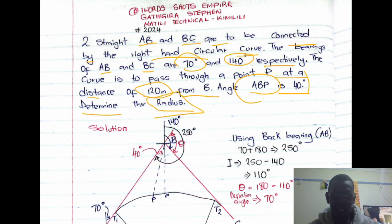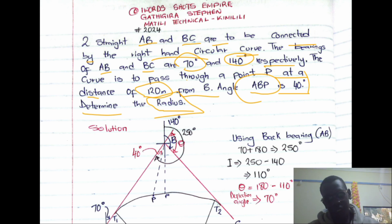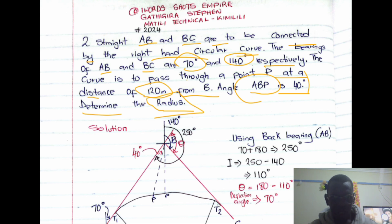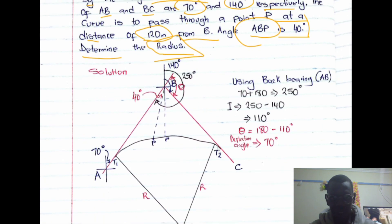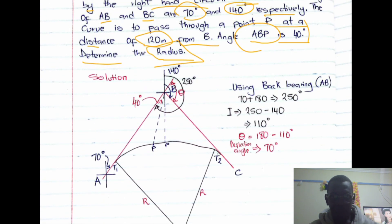I'm only going to calculate the radius here. This question has other parts, but we need the radius first in order to then find the tangent length, the chord, the length of curvature and the rest. That is what I will be doing.